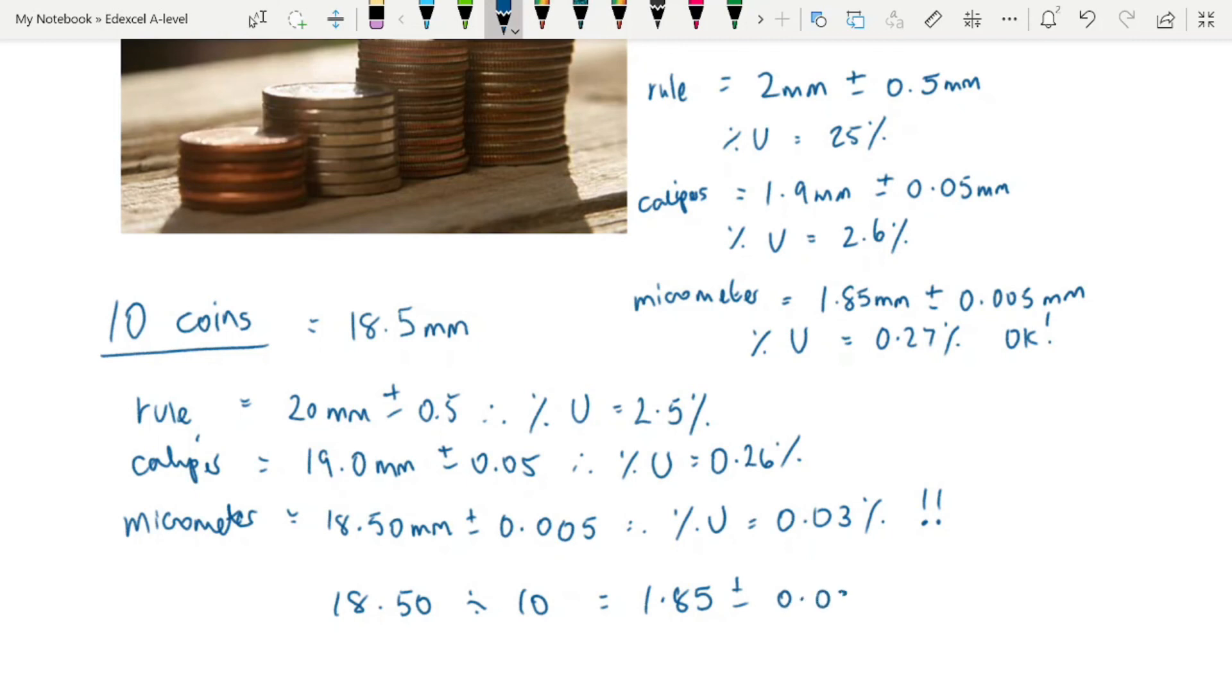So you still have a percentage uncertainty of 0.03%, even though you've divided your measurement that you made by 10, because your percentage uncertainty is calculated on the actual measurement that you make.